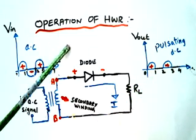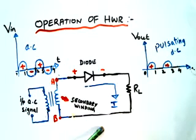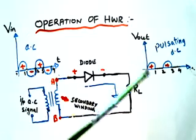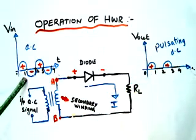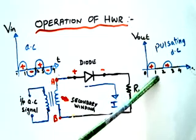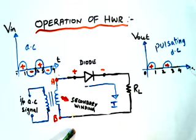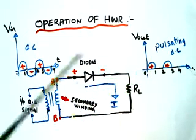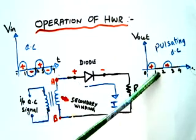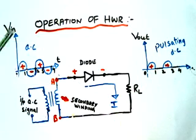In half wave rectifier, signal is obtained only for the positive half cycle (0 to 1). For the negative half cycle (1 to 2) we are not getting any output. So in half wave rectifier, 50% of the signal is wasted. This is the operation of half wave rectifier.